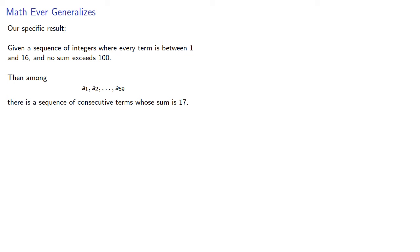And we can summarize our specific result. Given a sequence of integers where every term is between 1 and 16 and no sum exceeds 100, then among the first 59 terms there is a sequence of consecutive terms whose sum is 17. We can generalize this by altering the maximum sum to n and changing the desired sum to p, and this gives us... Well, do your own homework.